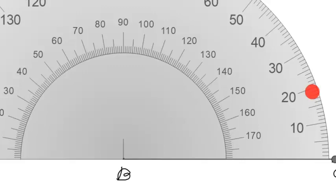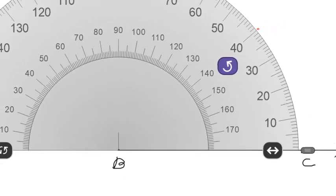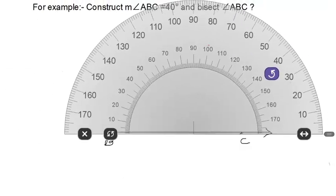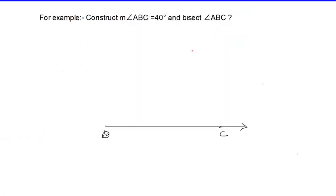10, 20, 30 and 40. Leave the protractor. Draw a line from Vertex B to the point making the angle 40 degree. Name the point, any point on the ray A. Point A. This is required angle ABC.